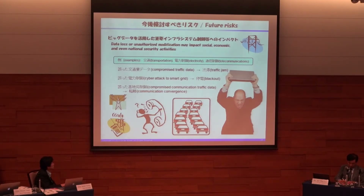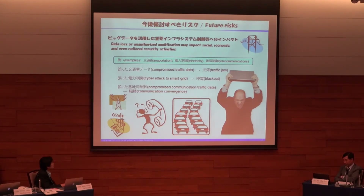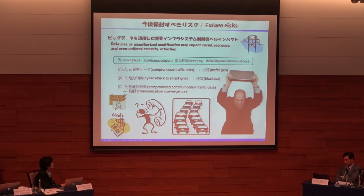Another aspect of big data security is the best practice of using big data for improving information security measures. The National Institute of Information and Communication Technology, NICT, has been developing a system called NICTAR, which observes, analyzes, and counteracts cyber attacks by utilizing a huge amount of network data collected by darknet sensors. In order to assure security of networks where huge amounts of data travel, this kind of big data analysis effectively provides solutions for counteracting cyber threats.